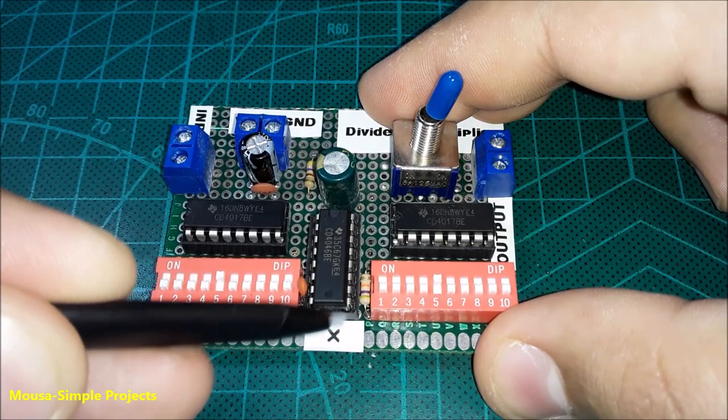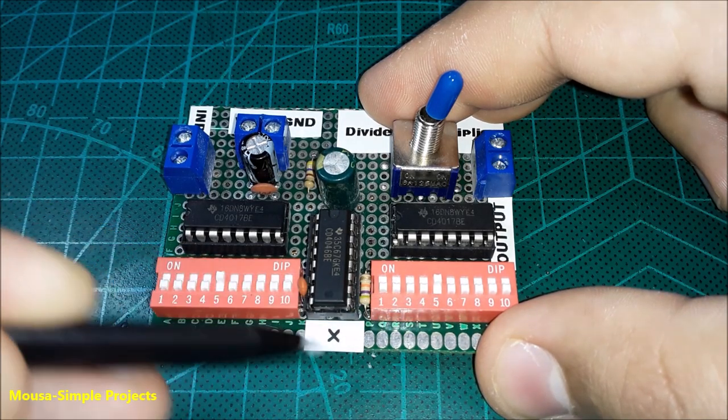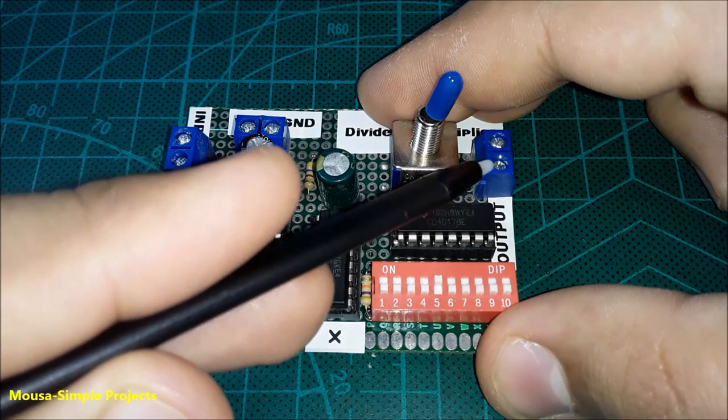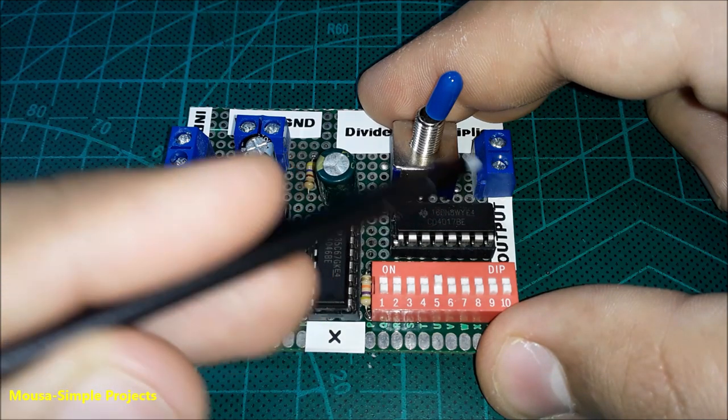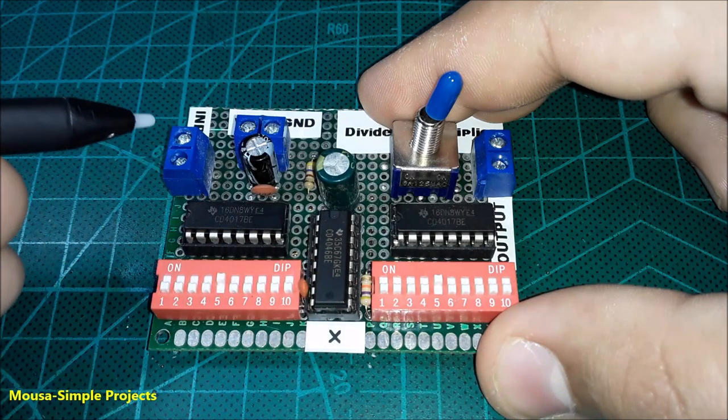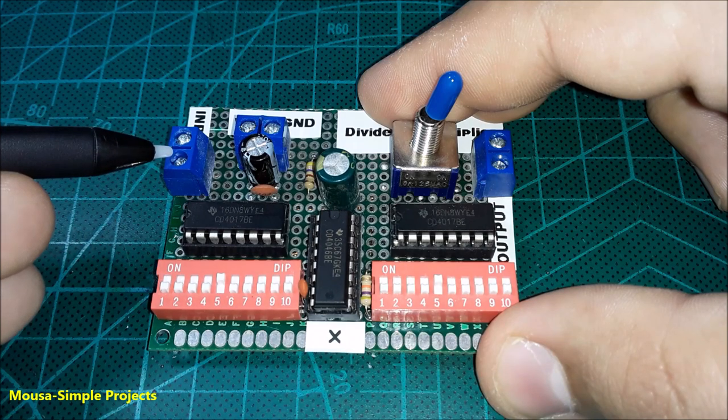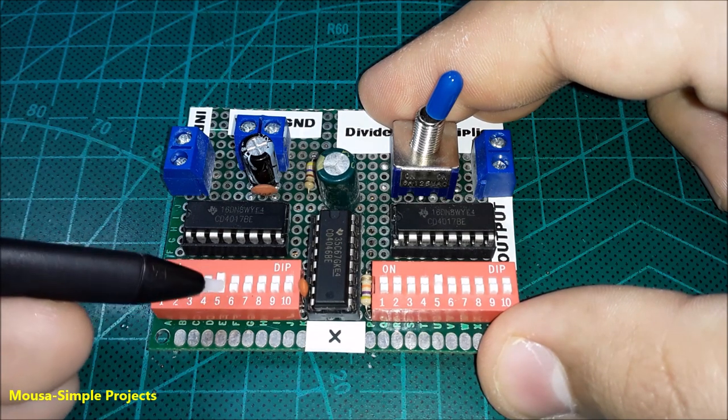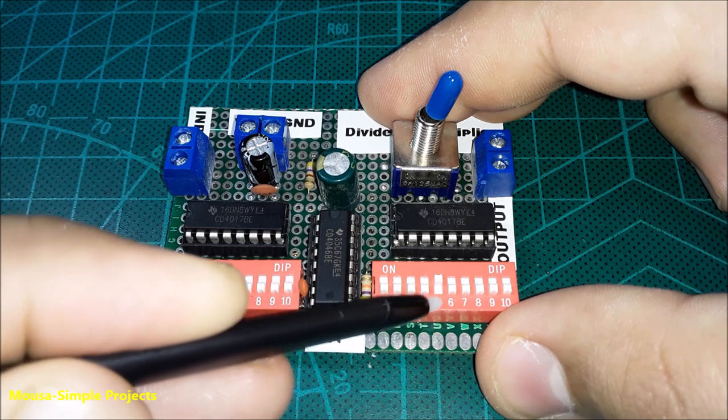For example, let's say you need the output frequency to be 25 times greater or less than the input. In that case, you have to select 5 here and 5 here, because 5 times 5 equals 25.